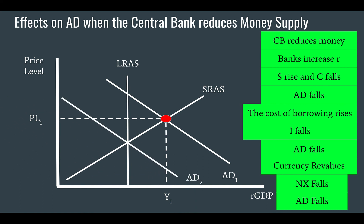It would be absolutely impossible for any collection of human beings to perfectly decide how much the money supply should be reduced in order to get aggregate demand from exactly one point to exactly another. But still, they will try to reduce aggregate demand. And with that, the central bank has reduced inflation, brought about a more sustainable level of production at YFE, when there is only frictional and structural unemployment, and they have closed the inflationary gap — the gap between Y1 and YFE.